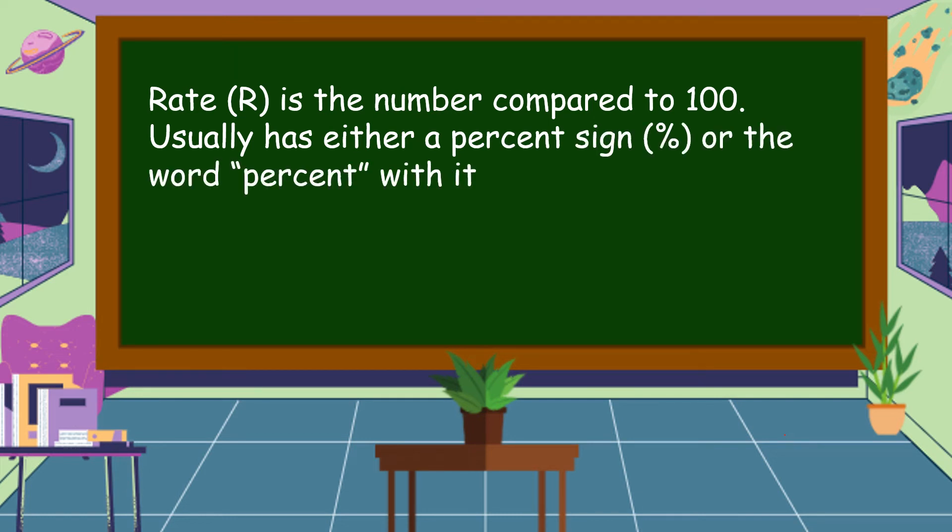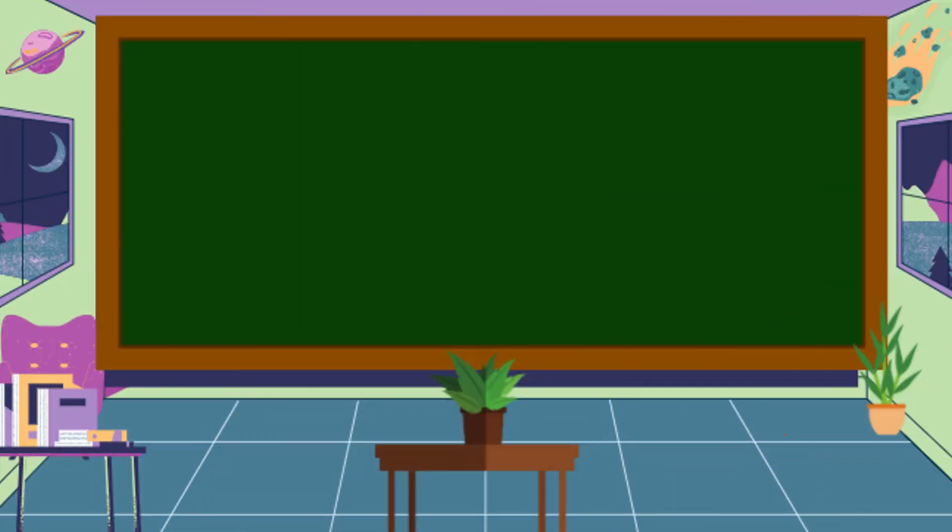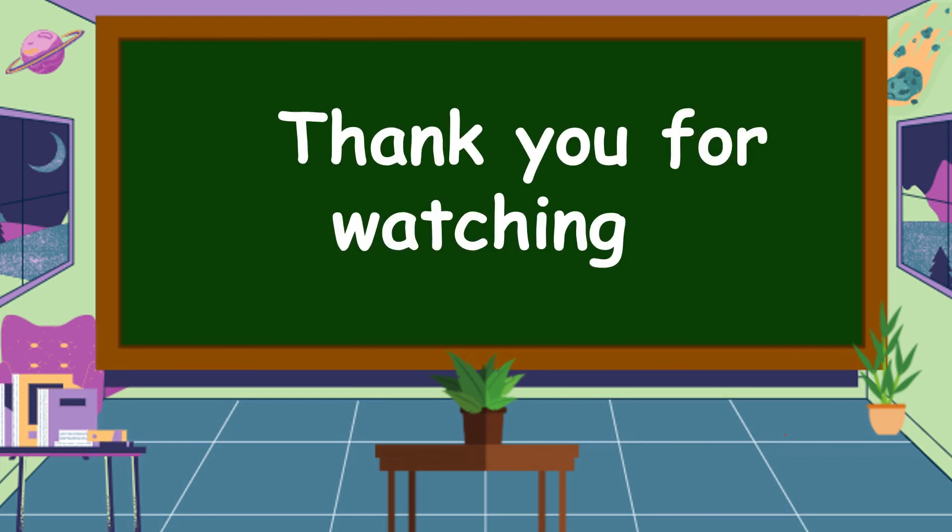R is equal to P over B, where R is the rate or percent, P is the percentage, and B is the base. I hope that you understand our lesson for today, and thank you for watching.